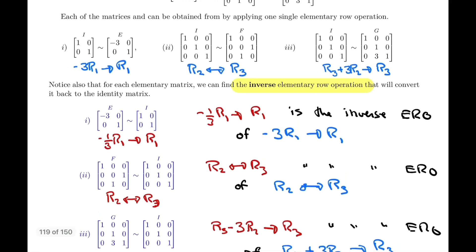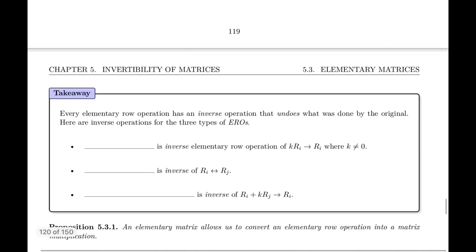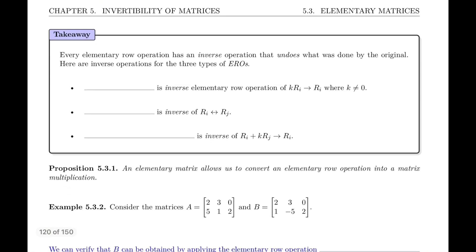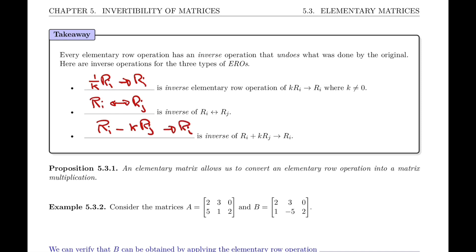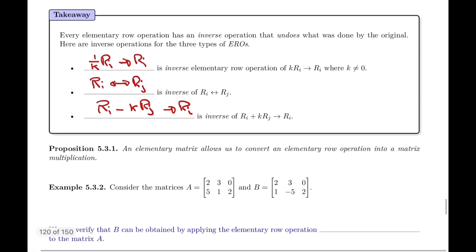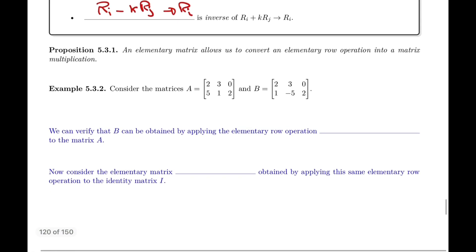We sum up the inverse elementary row operations in a table. If we have the operation k times row i, the inverse is one-over-k times row i. For row i swapped with row j, that operation is its own inverse. And for row i plus k times row j, the inverse operation is row i minus k times row j. Each elementary row operation has a corresponding inverse operation.